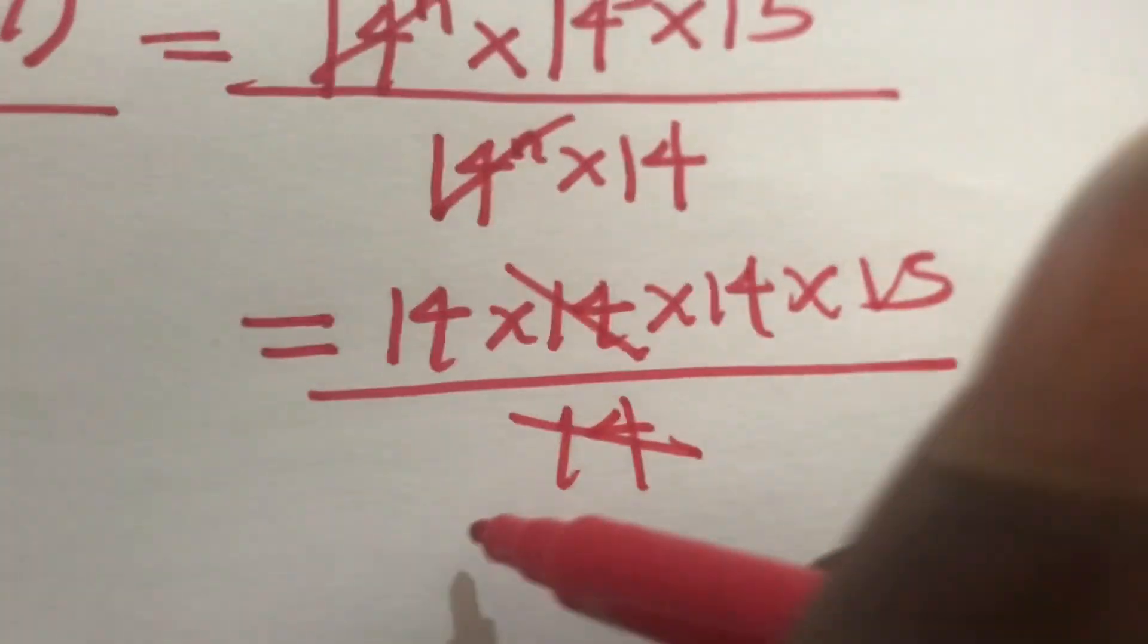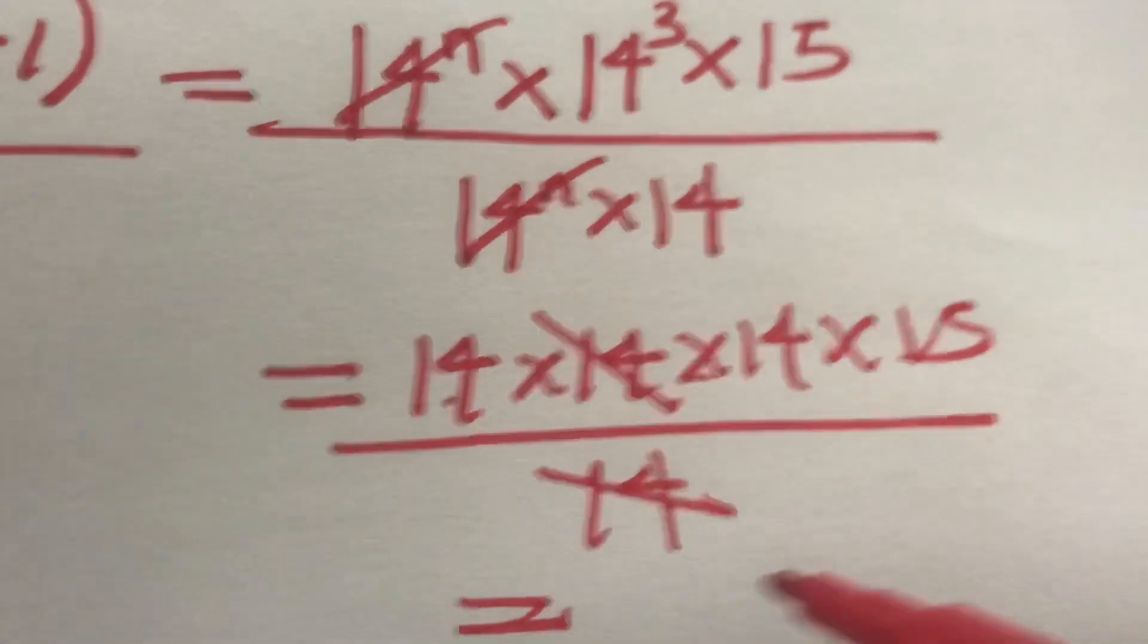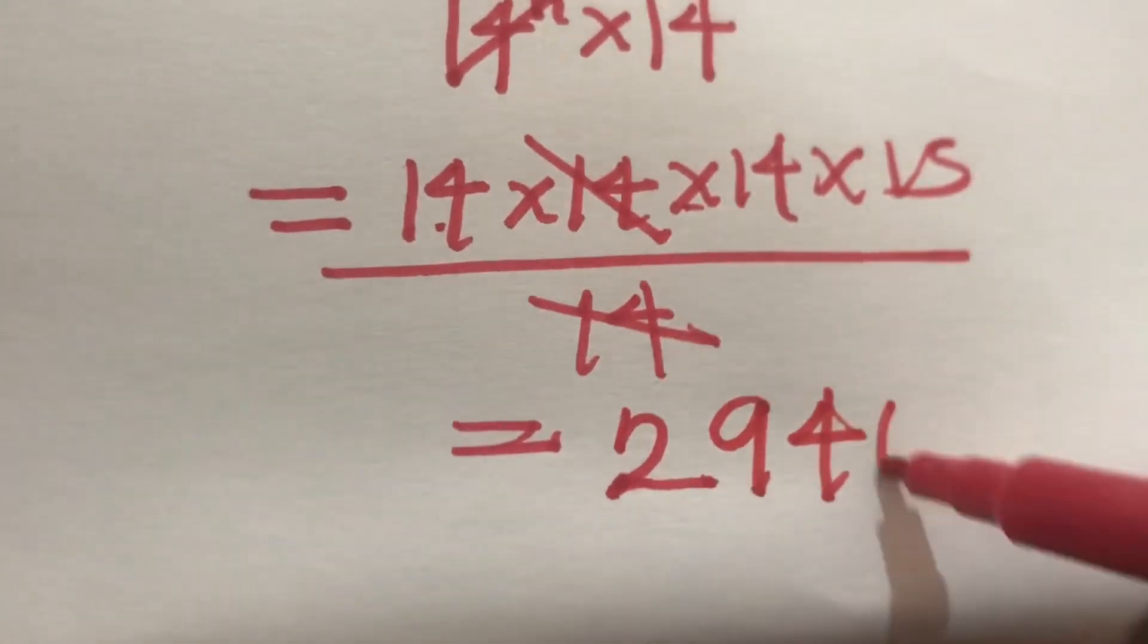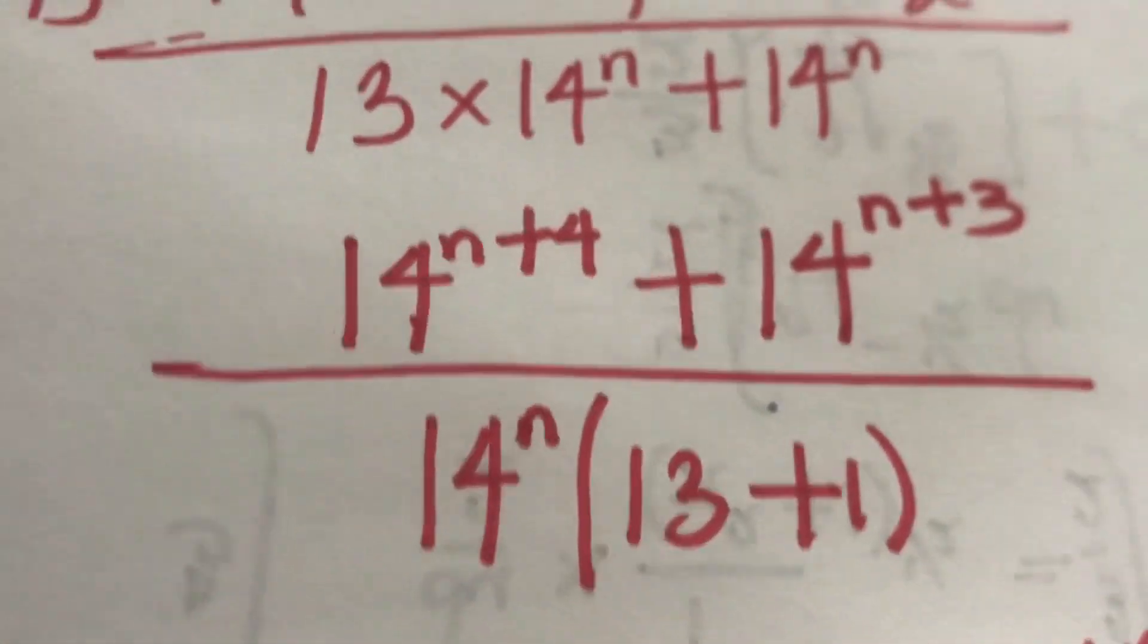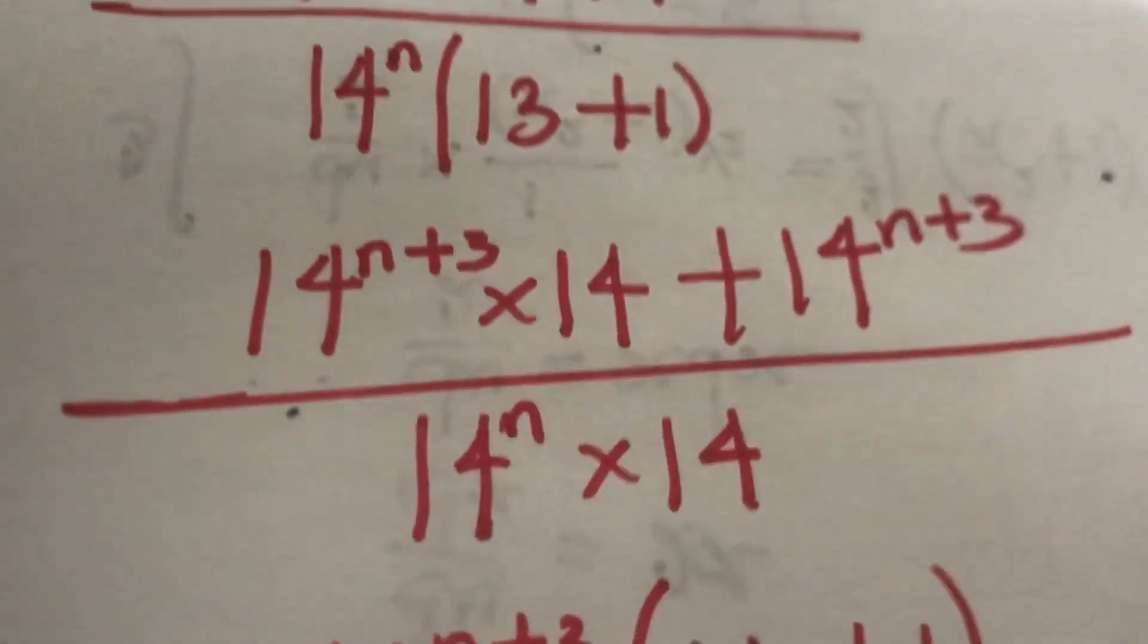Cancel out this, so we have 14 times 14 times 15 will give us 2,940. So that's the simplification of this expression here. Thank you for watching, subscribe to my YouTube channel.